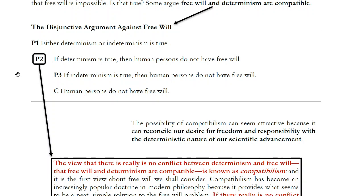To understand what compatibilism is, let's return to the second premise of the argument. The second premise might seem initially more obvious than the third one. If determinism is true, we don't have free will. If everything that happens is determined by the laws of nature and prior events, then it doesn't seem there's any room for free will, or to say that we actually make our own choices and can be responsible for those choices.